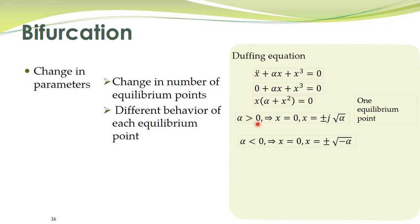For alpha less than 0, the same equation has these roots. Now alpha is negative, and the term inside the square root becomes a positive number. The square root of a positive number is a real number. So now we have three real roots to this equation — three equilibrium points.